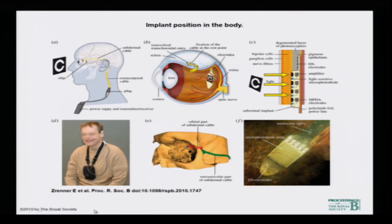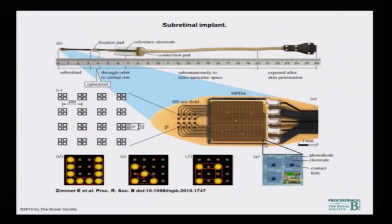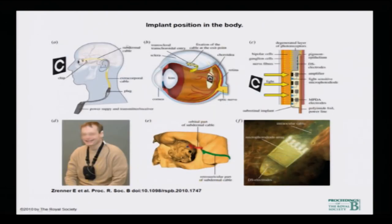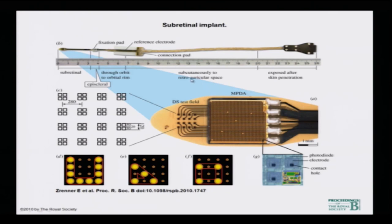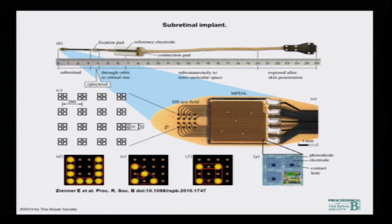Please go through the reference by Zrenner E., published in the Proceedings of the Royal Society B, 2010. These are the light-sensitive micro-photodiodes — the image plate with all the electrodes connected underneath. You have the photodiode electrodes and contact holes — this is how they look physically. The reference is Expert Review in Ophthalmology, 2009. PS is the power supply, R is the receiver, S is the stimulator, and SP is the signal processor.